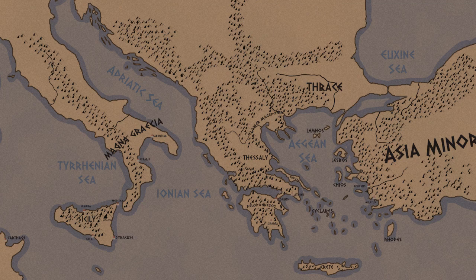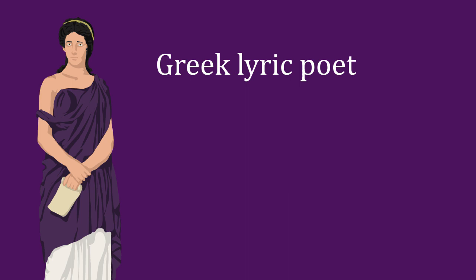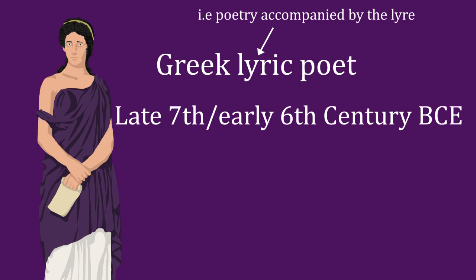Lesbos is the third largest of all the Greek islands and is located in the northern Aegean Sea off the coast of what is now Turkey. As for Sappho, she was a Greek lyric poet who lived during the late 7th century, early 6th century BCE.